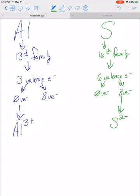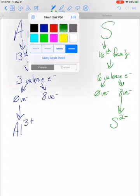So, once we've figured out what their charges are, we can figure out how they're going to bond using the crisscross rule. All that the crisscross rule says is,